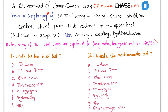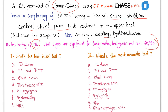Here is a case: a 63-year-old male, Jamie Dimon, CEO of JPMorgan Chase, comes in complaining of severe tearing or ripping, sharp, stabbing central chest pain that radiates to the upper back between the scapulae. He is vomiting, sweating, and has lightheadedness. He has a history of hypertension. Vital signs are significant for tachycardia, tachypnea, and blood pressure of 160 over 90. Question one: what's the best initial test? Question two: what is the most accurate test?